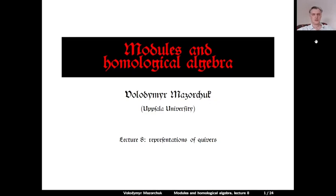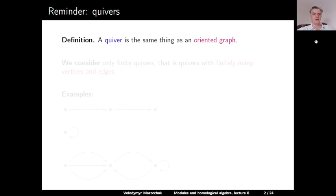Modules in Homological Algebra, Lecture 8: Representations of Quivers. Let's start by recalling what a quiver is. A quiver is the same thing as an oriented graph. For simplicity, we will consider only finite quivers, that is, quivers with finitely many vertices and finitely many edges.